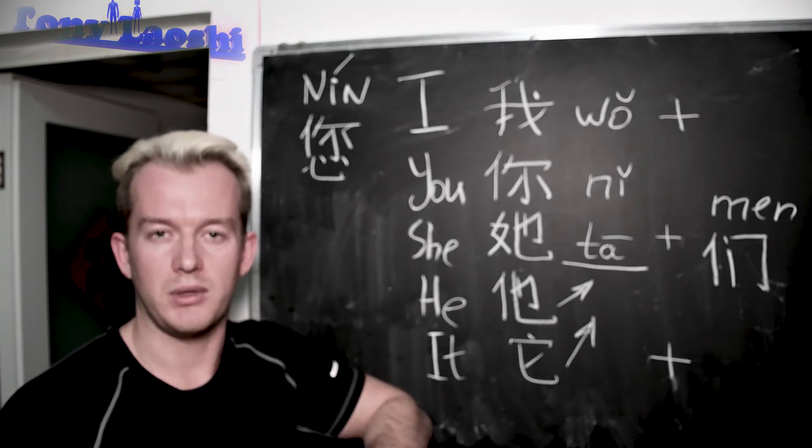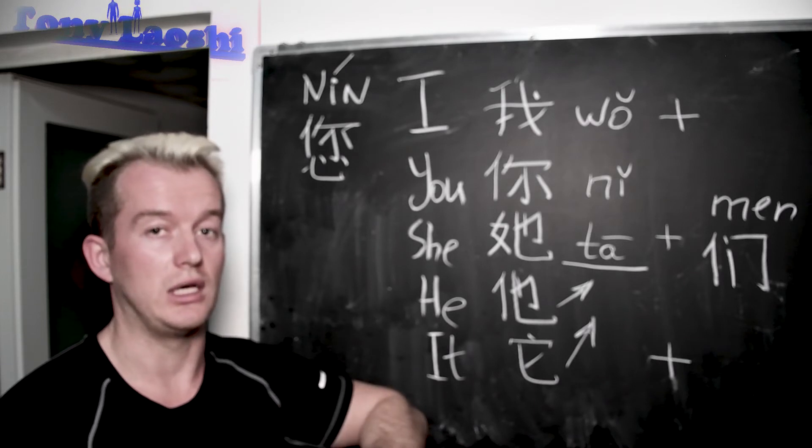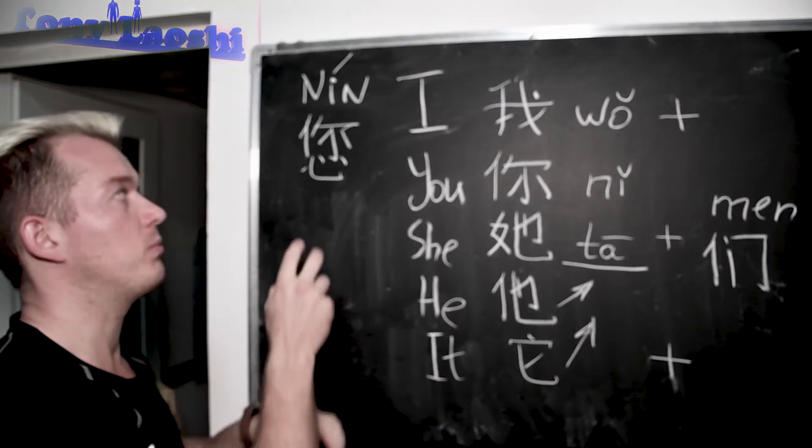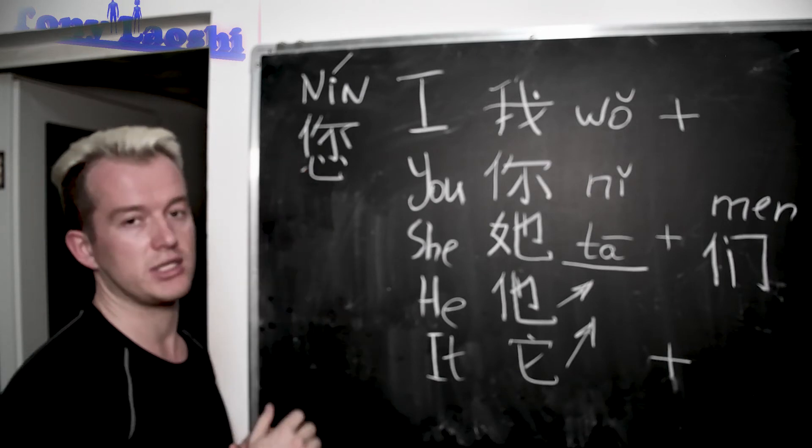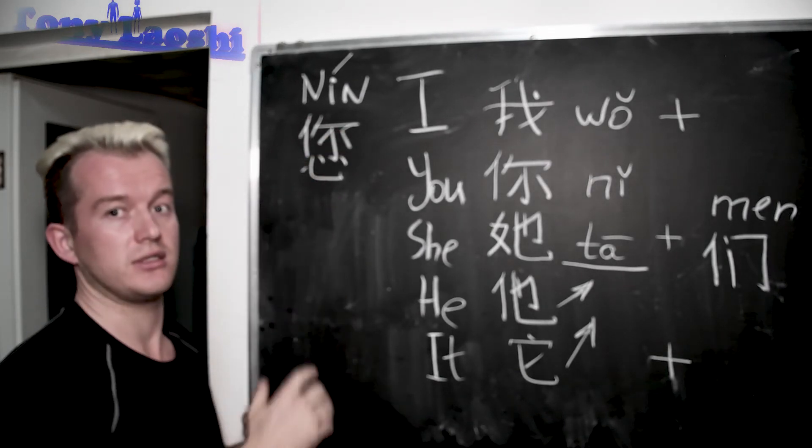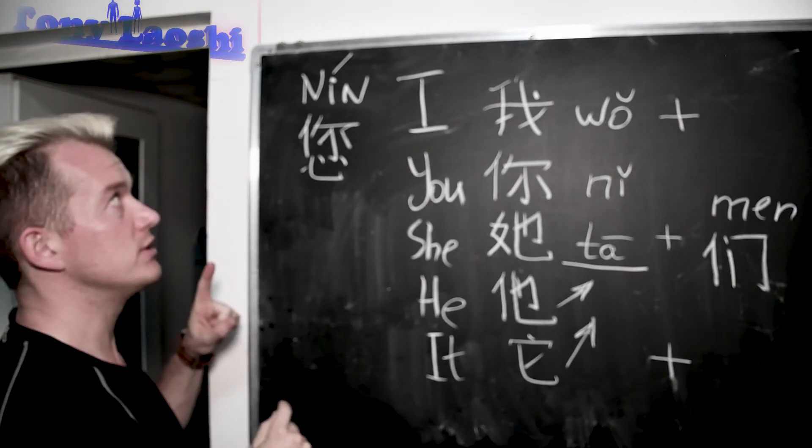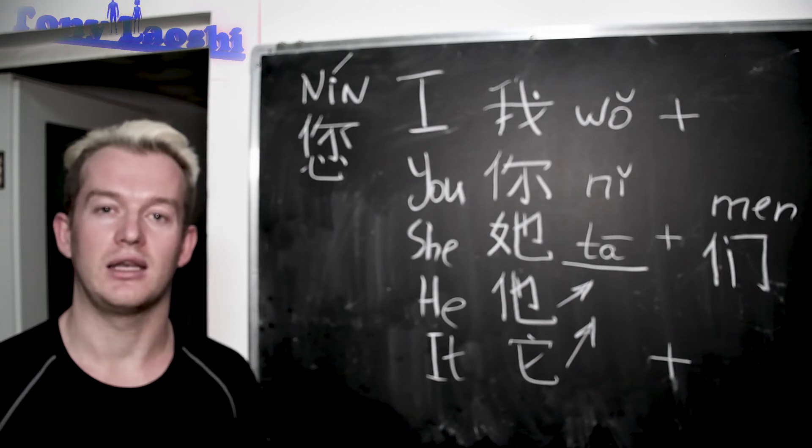And then if you want to sound incredibly polite, then you have to create another form of 你, which is 您. So we add one more particle, radical technically, to this Chinese character. Altogether 您. That's a second tone. 您, 您, 您.